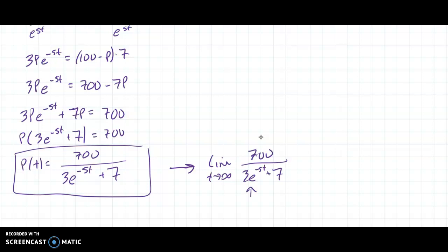So this term, because it's got an exponential on it, goes to 0, which gives me 700/7, which is 100. Check mark. Sweet.